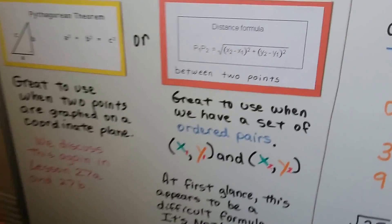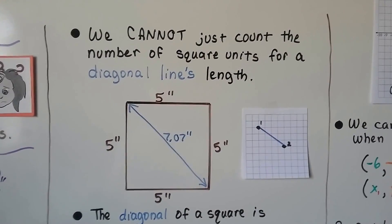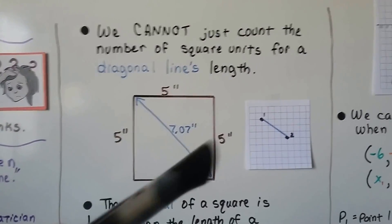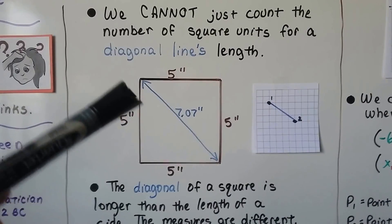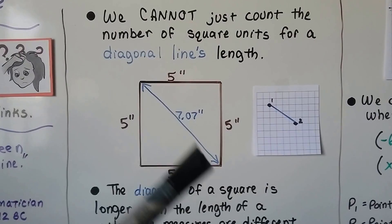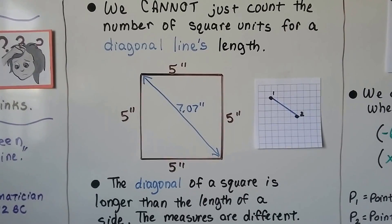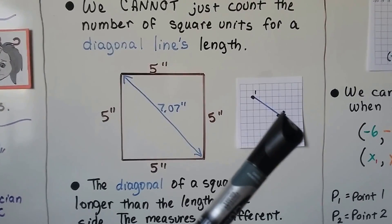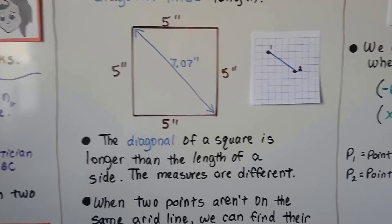Let's see how this is done first with the Pythagorean Theorem. We can't just count the number of square units for a diagonal line's length. If we have a square where every side is 5 inches, when we go to measure the diagonal, it's going to be 7.07 inches. You can't just count the squares — the diagonal of a square is longer than the length of a side. The measures are different.